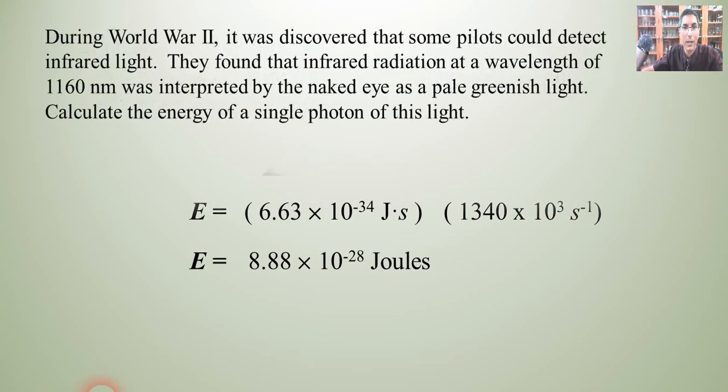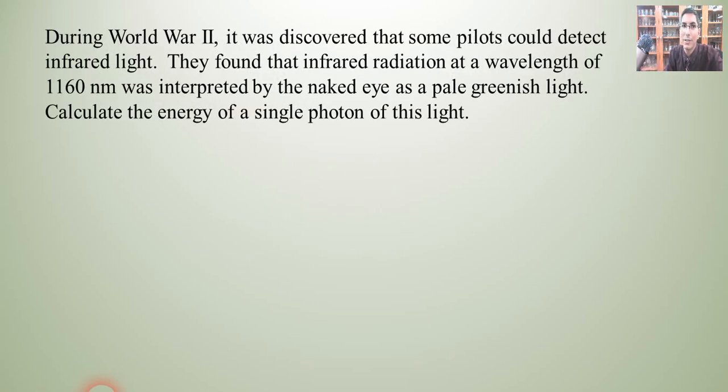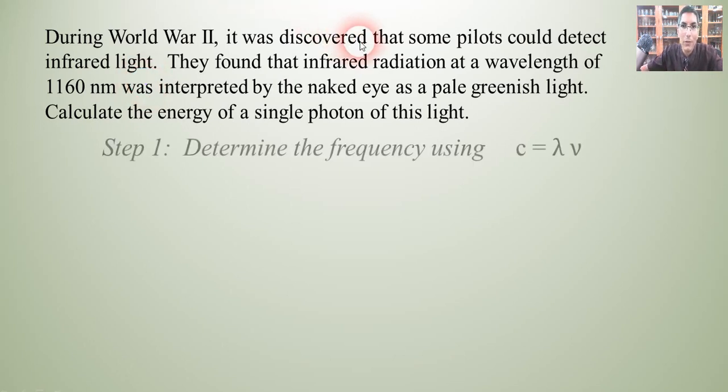Let's try another example. During World War II, it was discovered that some pilots could detect infrared light. They found that infrared radiation at a wavelength of 1160 nanometers was interpreted by the naked eye as a pale greenish light. Calculate the energy of a single photon of this light. Now, let's think about this. The equation that we just looked at had energy and Planck's constant and frequency. Well, in this equation, we're not given frequency, are we? We're given the wavelength. But we learned from the first equation that if we're given wavelength, we can figure out the frequency. So we're going to have to do a first step here to determine the frequency using c equals lambda nu. And then, once we know the frequency, we can plug into E equals h times nu.